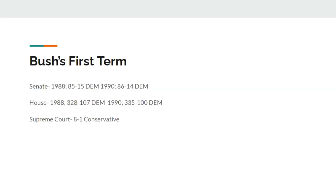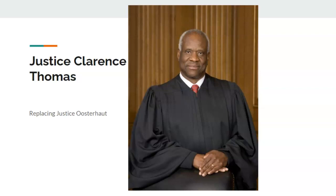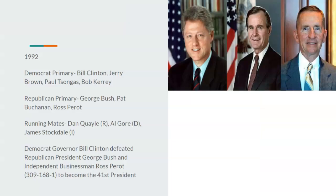Within Bush's first term, after 1988, Democrats have an 85-seat Senate majority and a 328-seat House majority. After 1990, Democrats have an 86-seat Senate majority and a 335-seat House majority. The Supreme Court stays 8 to 1, but Bush nominates two justices: Justice David Souter, replacing Justice Brennan Jr.; and the first Black Supreme Court justice in this timeline, Justice Clarence Thomas, replacing Justice Oosterhout. In 1992, the economy crashes again under Bush — the exact same thing that happens in real life — and Democrat Governor Bill Clinton defeats Republican President George Bush and independent businessman Ross Perot 309 to 168 to 1 to become the 41st President.